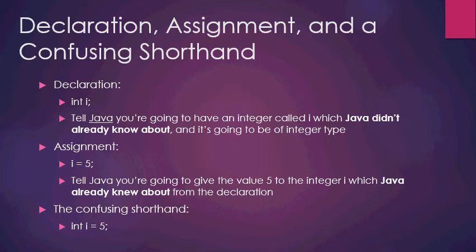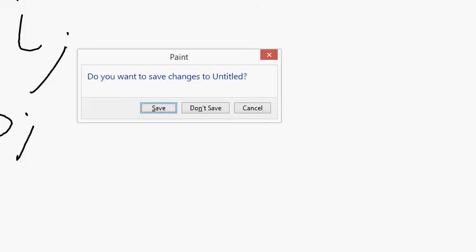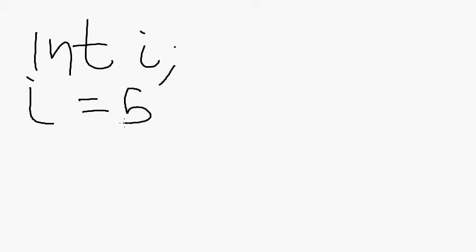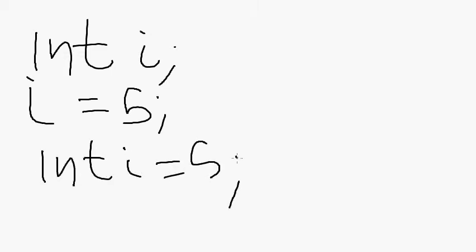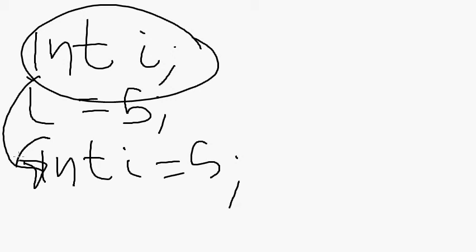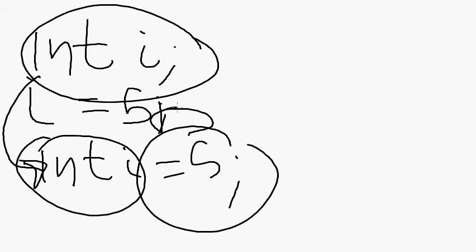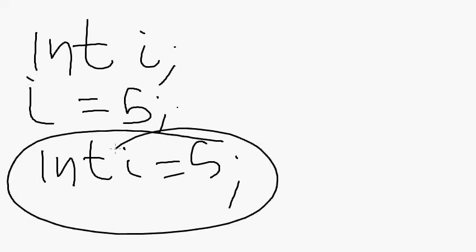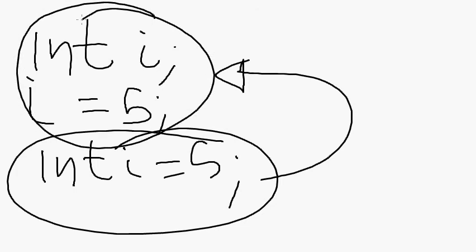What you're doing with 'int i = 5' is merging the other two statements together. So you have 'int i' and 'i = 5'. When you do 'int i = 5', you're really invoking these two statements together — the declaration 'int i' and the assignment 'i = 5'. This notation is a shorthand for both of these things at the same time.